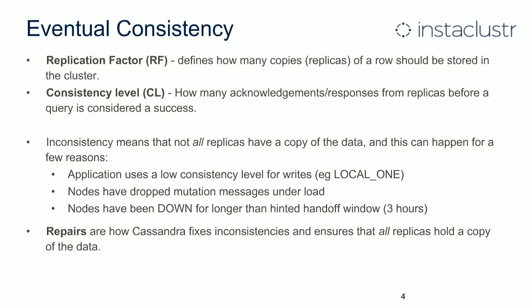Consistency is important to understand when managing your cluster. There are two factors: the replication factor, which defines how many replicas of data should be stored in the cluster; and the consistency level, set at the application or query level, defining how many replicas must respond before a query is considered a success. When data becomes inconsistent, that means not all replicas that should have the data actually have it. This can happen, for example, if a node is down for maintenance longer than the hinted handoff window — three hours — and it misses writes. The only way to fix this is doing repairs.